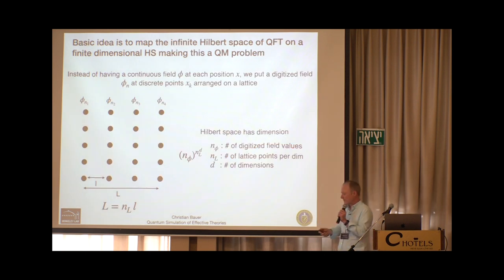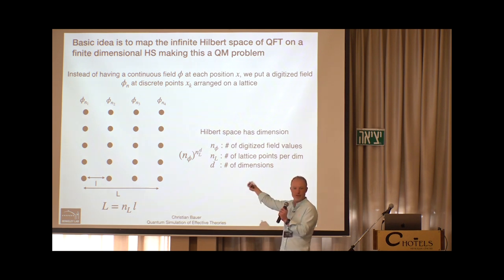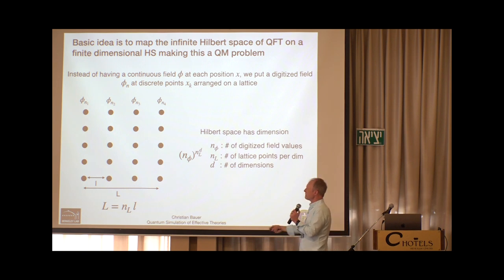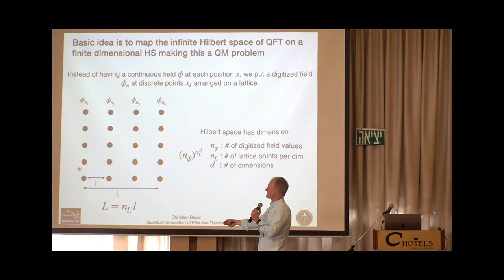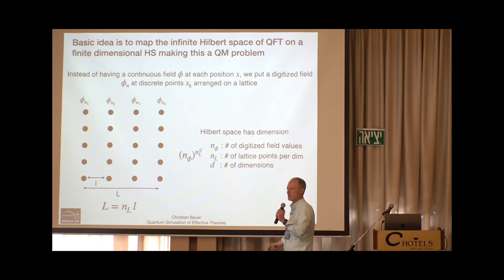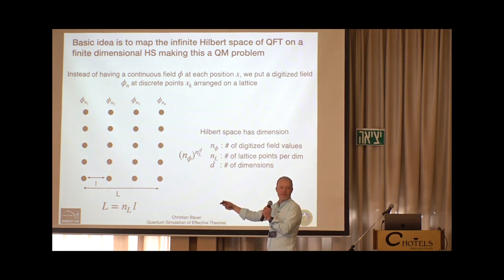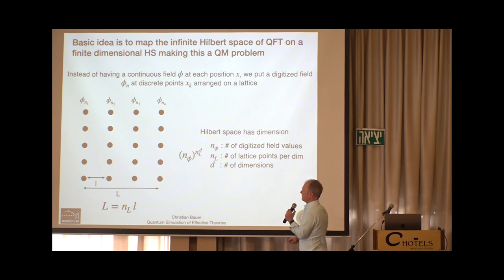Think of two dimensions: instead of sampling fields at every point, we only look at discrete lattice points and record the field value phi at those points. If we make these points close enough together, hopefully we get a good approximation. This is what is called lattice field theory. The key parameters are: the lattice spacing little l, the total lattice size capital L, and the number of digitized field values at each site.